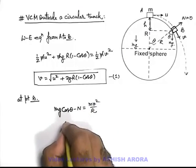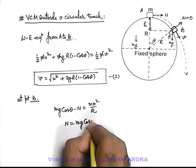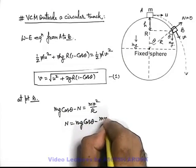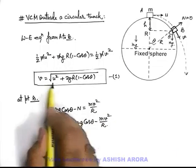mg cos theta minus N is the necessary centripetal force which is mv²/R. Here the value of N we can write it as mg cos theta minus mv²/R. If we substitute the value of